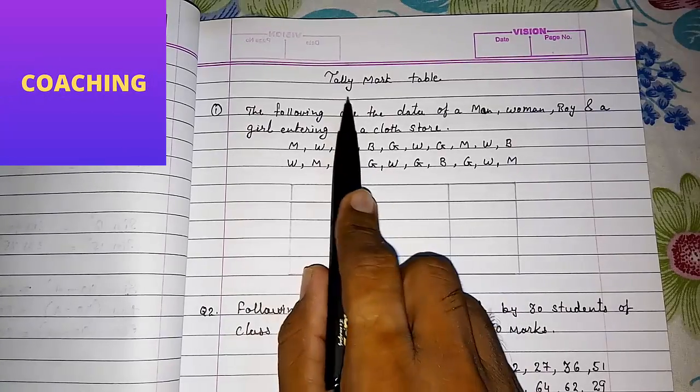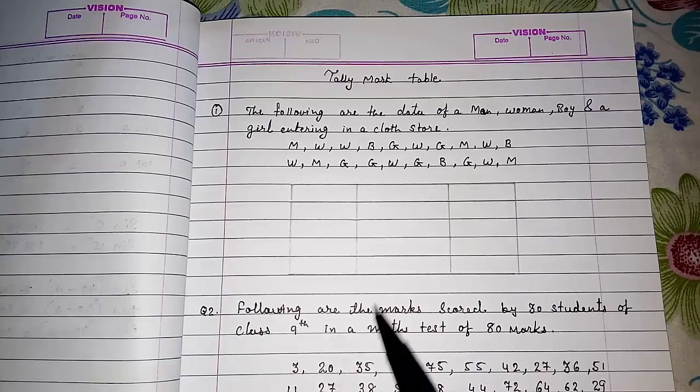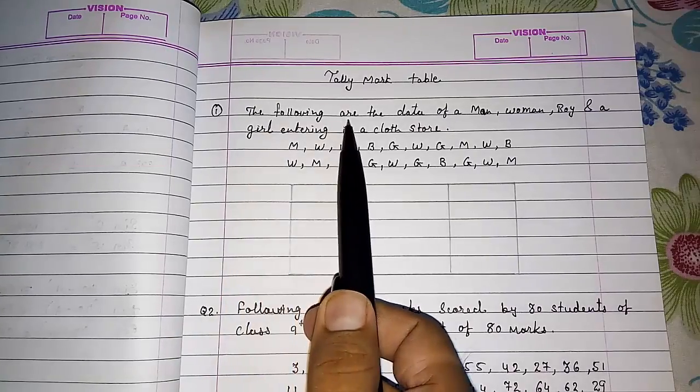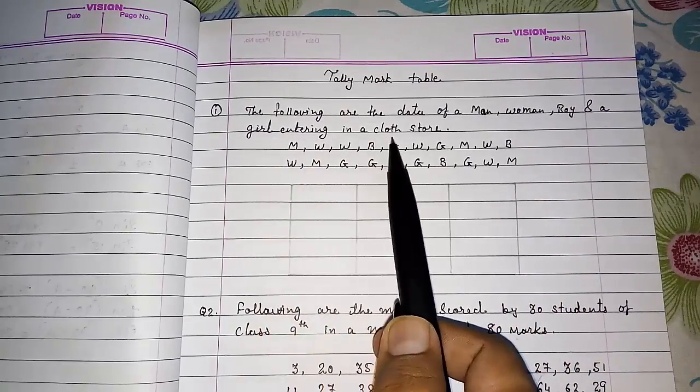Hello friends, today we are going to study about tally mark table. Look here, the following are the data of a man, woman, boy and a girl entering in a clothes store.